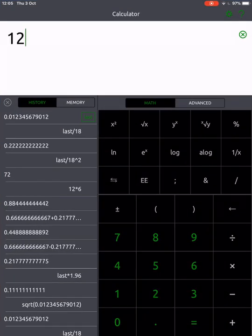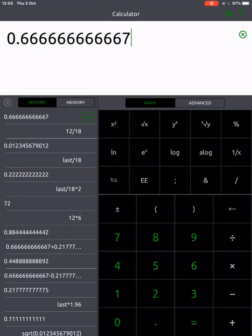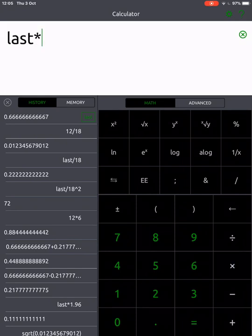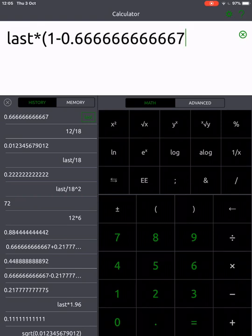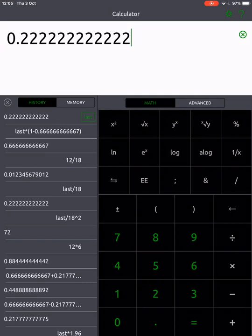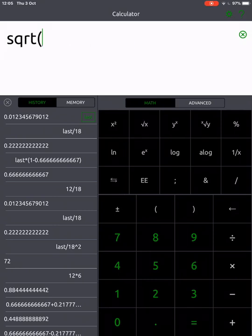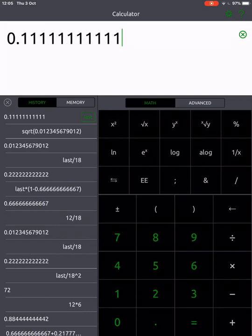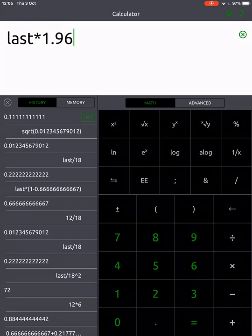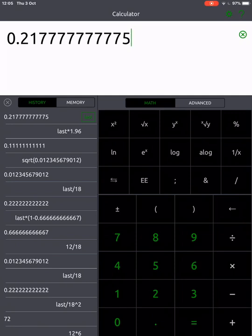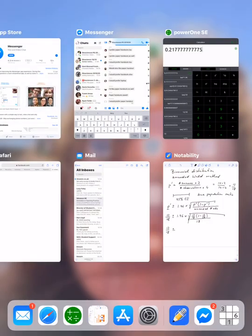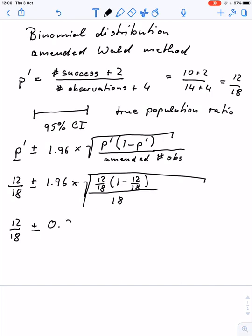So we have 12 over 18. We multiply that by who didn't vote for it, times 1 minus this one, divided by the amended number of observations, that was 18. And now we need to take the square root of that. We multiply that by 1.96, and that gives basically our margin of error. So 0.218.